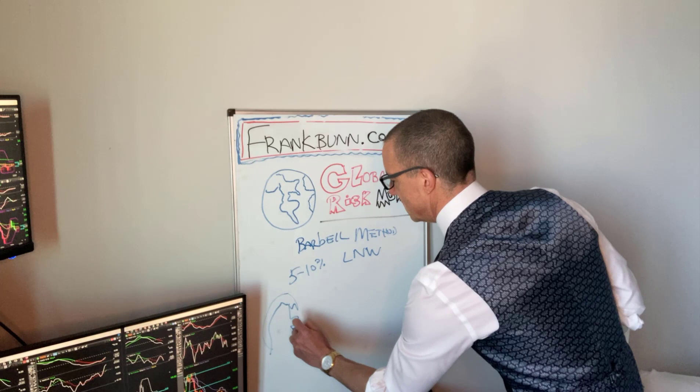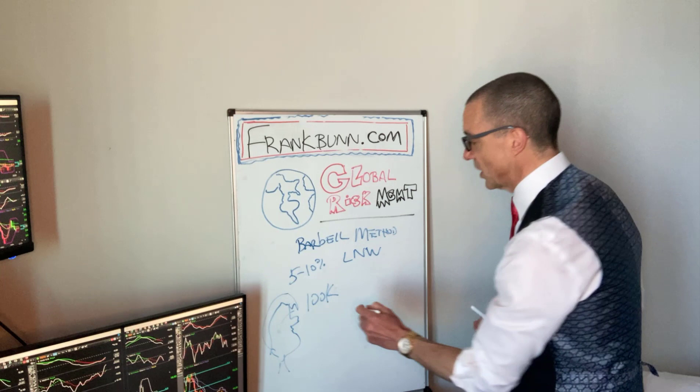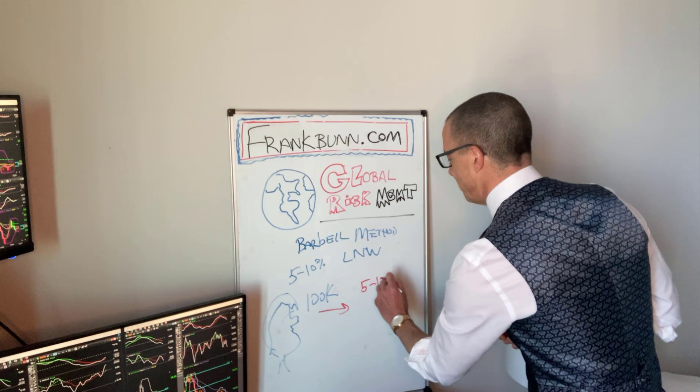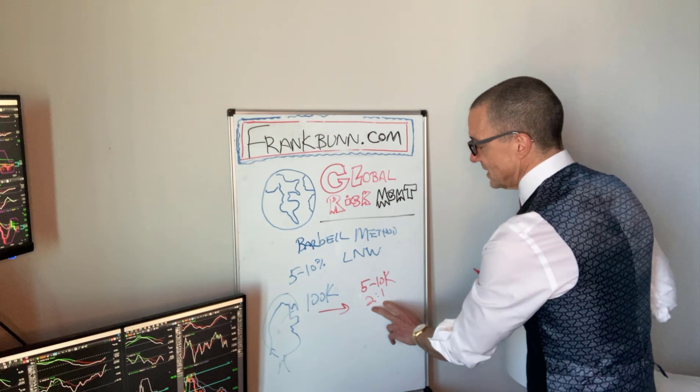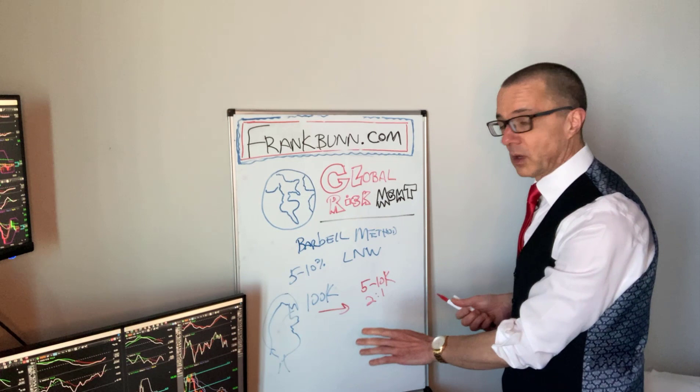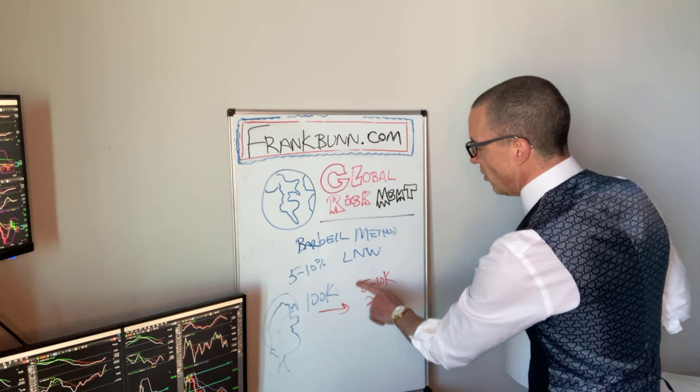For example, we have Trader Joe here and he's got a hundred thousand dollars in liquid net worth. What he's going to do is begin with five to ten percent of that, which is five to ten thousand dollars, and leverage that two to one. He's not concerned about using leverage because he's able to eliminate risk long before he'd ever get a margin call. This is how he can globally manage risk — investing a small amount at two to one.